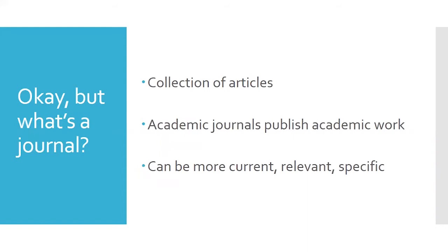When I say journal, you can think of it as a collection of articles like a magazine, but usually with a lot fewer advertisements. Peer-reviewed journals are used by academics of all professions to update each other about their work, inform the world about discoveries or changes in research, or contribute to their field formally. Journals are published on a quicker timetable than books, so they're more current and often more relevant to trending topics, and because they're relatively short, they can provide targeted, specific information about a single topic.